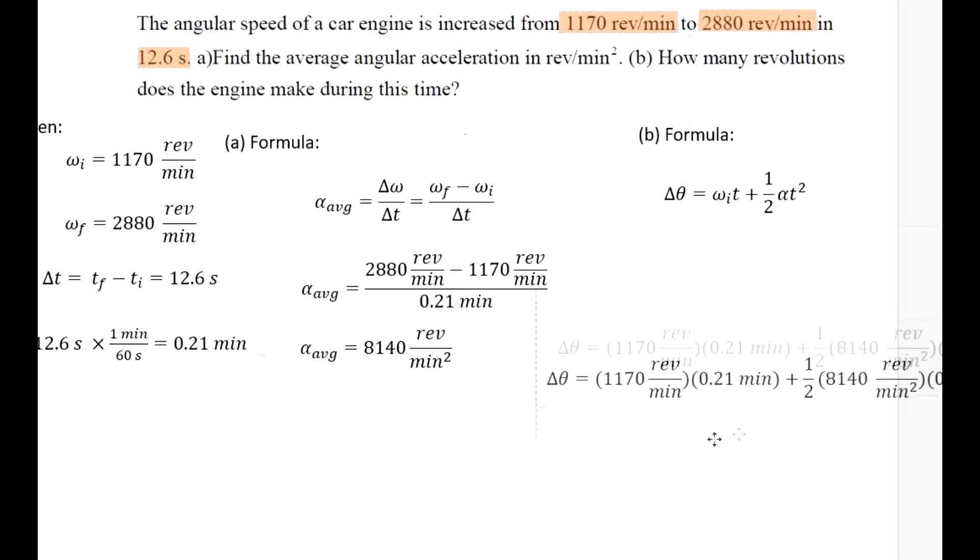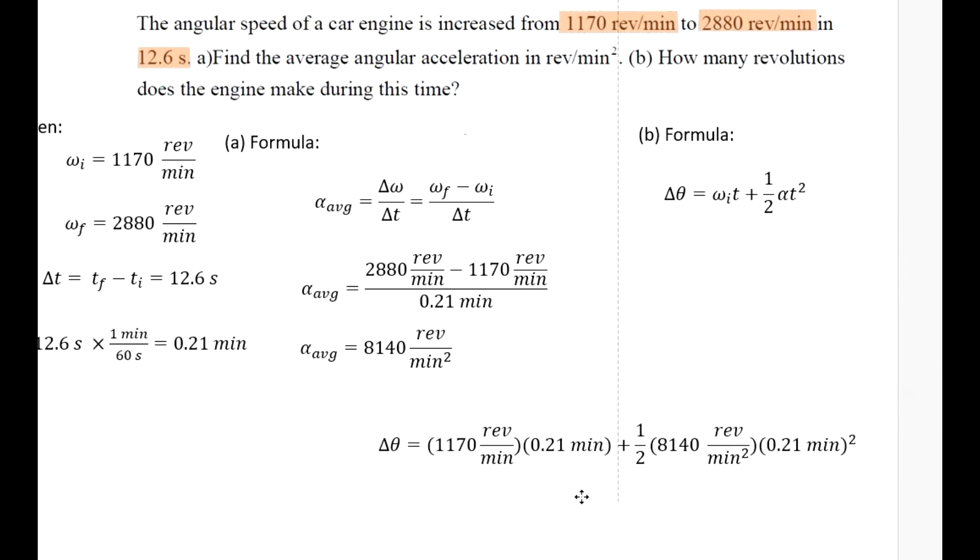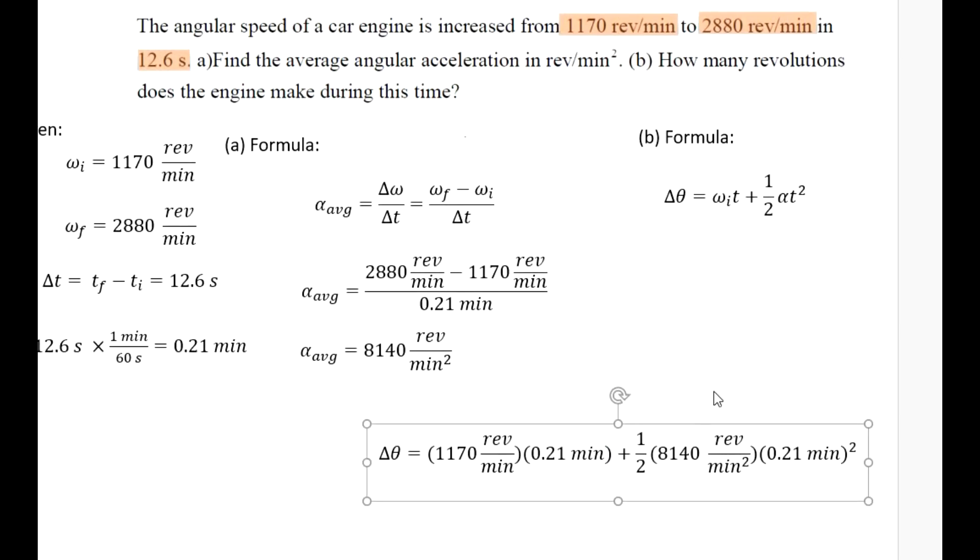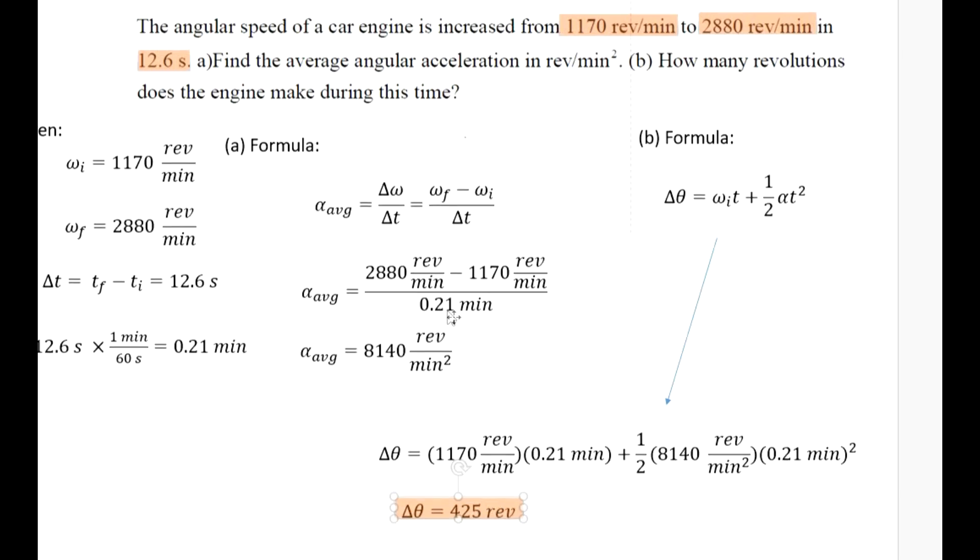And so we just substitute values. It's a long solution, so let's put it down here. Just draw an arrow there. And by substituting the values, we obtain delta theta of 425 revolutions in just 12.6 seconds. Wow, what a fast engine.